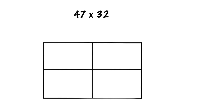We are going to start with 47. We need to expand out 47 using place value. The 4 is actually worth 40 because it's in the tens place, and the 7 is just 7 because it's in the ones place. And we know 40 and 7 makes 47.